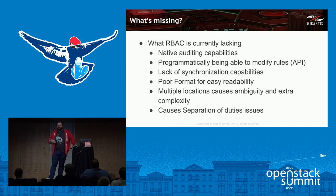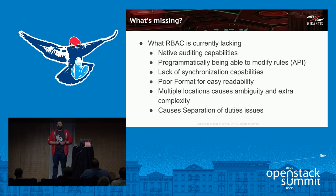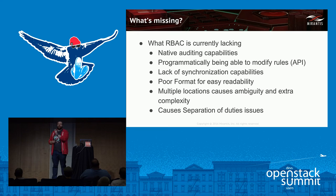Yes, there are external systems before someone argues with me, but they all have different pitfalls and problems. Lack of synchronization — if I'm running a massively scaled cloud and I want to put 20 Nova API instances out there, every time I create that instance I need to make sure that the policy file is copied identically across each one. That's a big challenge because there's no centralized store.